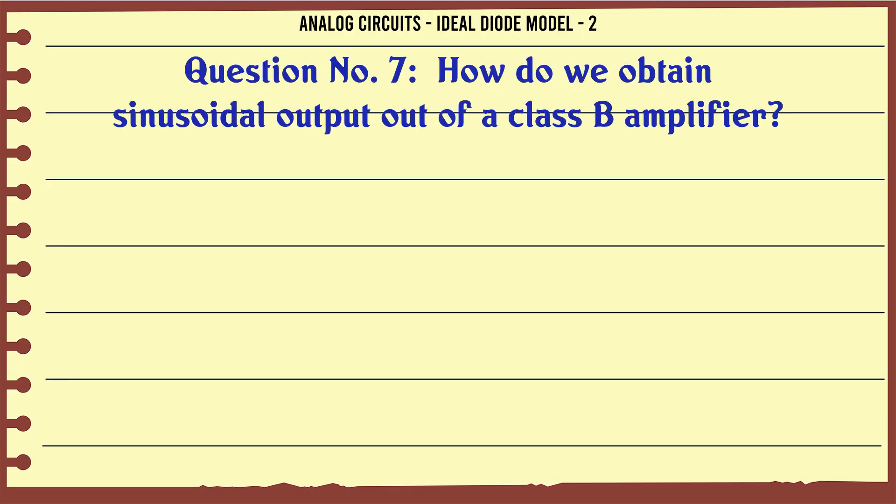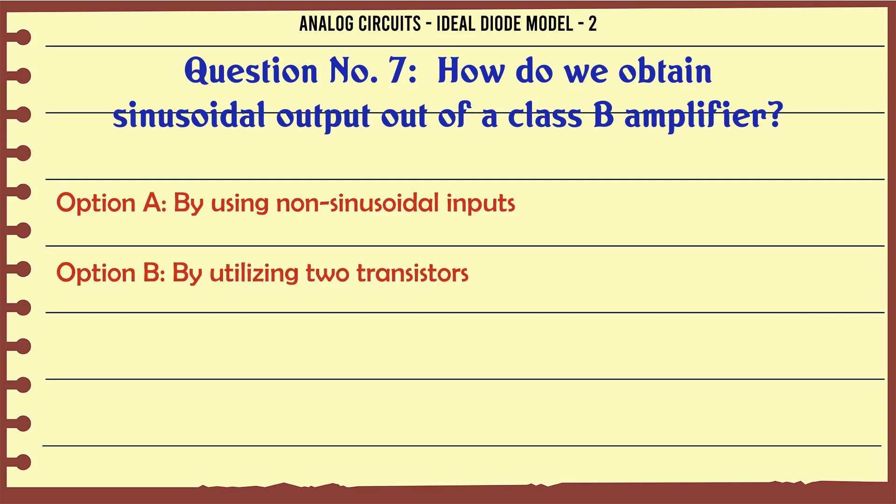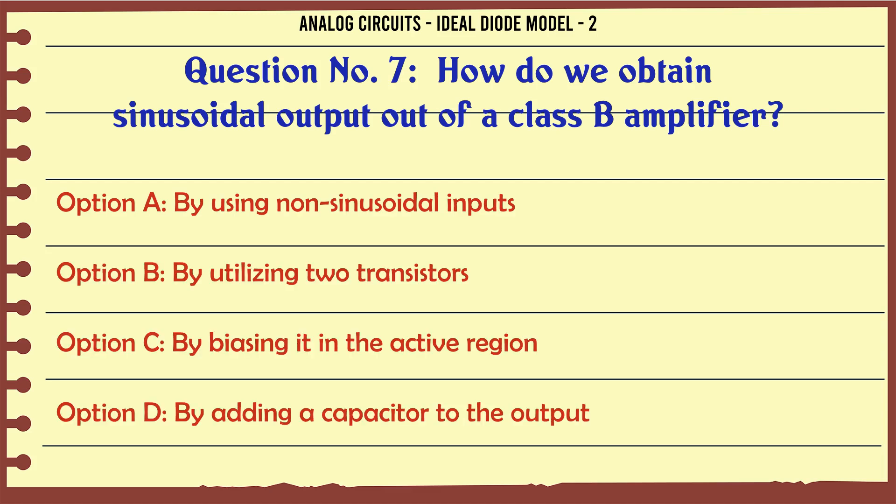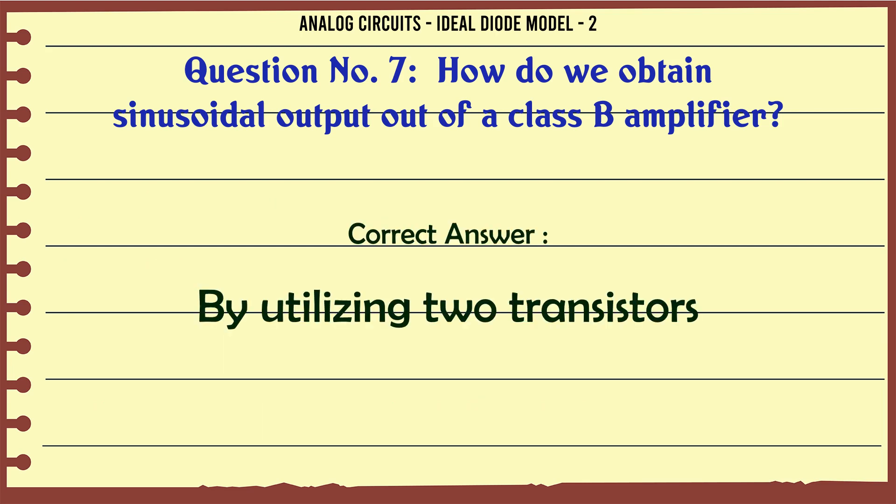How do we obtain sinusoidal output out of a class B amplifier? A) By using non-sinusoidal inputs, B) By utilizing two transistors, C) By biasing it in the active region, D) By adding a capacitor to the output. The correct answer is: By utilizing two transistors.